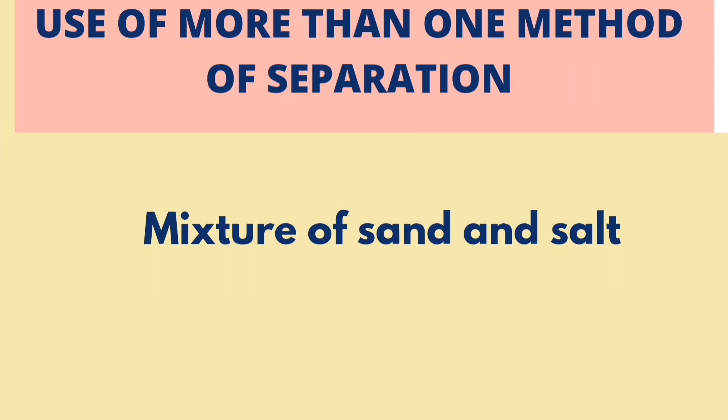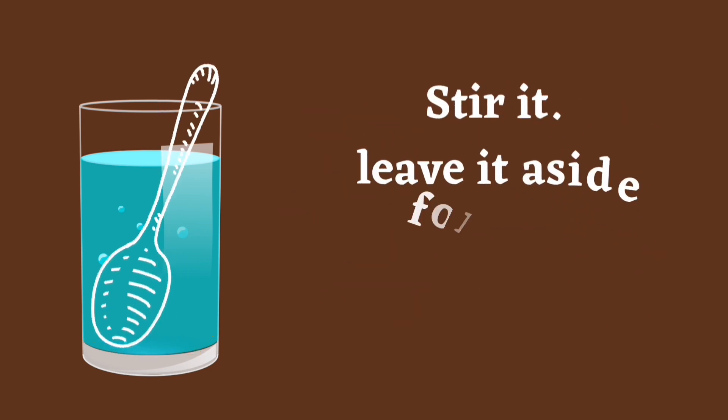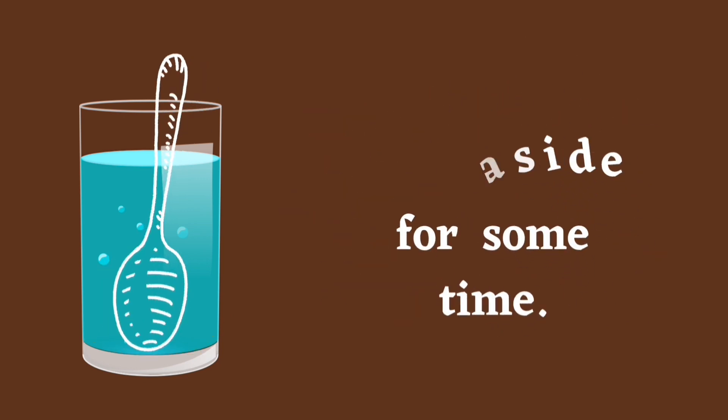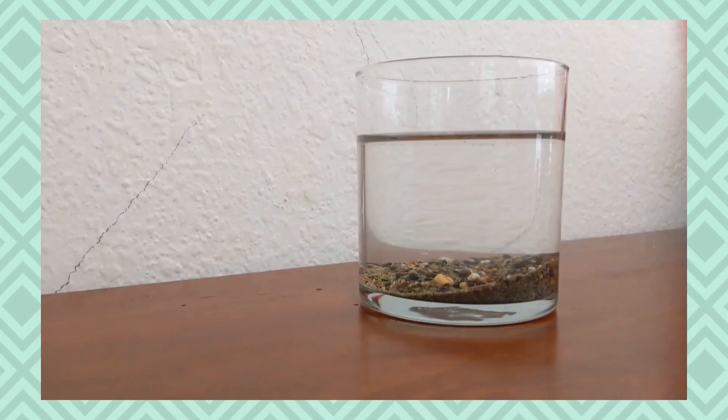Mostly, one method is not sufficient to separate different substances present in a mixture. In such cases, we need to use more than one of these methods. To separate sand and salt from the mixture, first take the mixture in a glass and add some water. Stir it with a spoon and keep it aside.